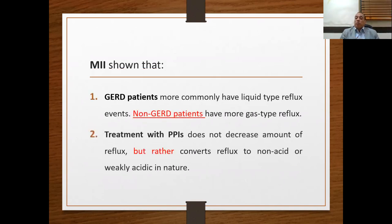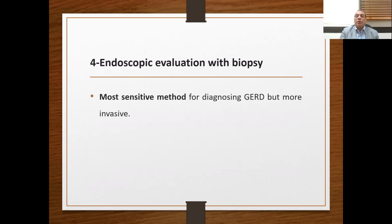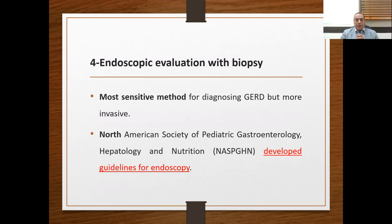GERD patients mostly have a liquid type reflux, while non-GERD patients have a gas type. Proton pump inhibitors do not decrease the amount of reflux, but rather convert it to non-acidic or weakly acidic type. The fourth investigation is endoscopic evaluation with biopsy — the most sensitive but most invasive method. The North American Society of Pediatric Gastroenterologists and Hepatologists developed guidelines indicating endoscopy for: infants and children with GERD failing drug treatment, initial workup for weight loss, unexplained anemia, fecal occult blood, or recurrent pneumonia, and when Barrett's esophagus is suspected.